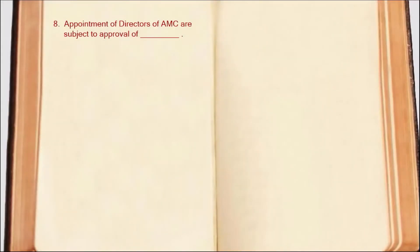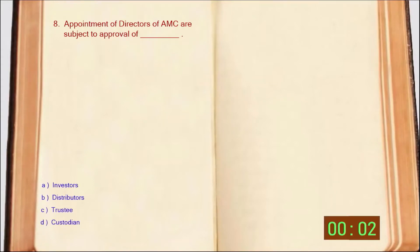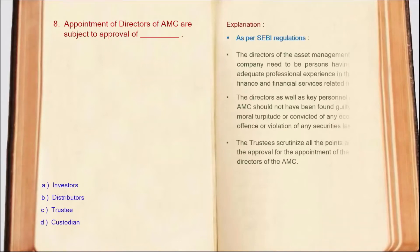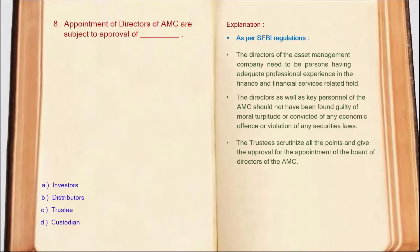Next question: Appointment of directors of AMC is subject to approval of DASH. For becoming an AMC director, SEBI has certain guidelines and criteria. Directors should have adequate professional experience in the field of financial services. Any immorality would be a negative point for the appointment. Directors should not be involved in any economic offense or law violation. Trustees verify all points and give approval for the appointment of AMC directors. So the correct answer is Option C: Trustees.